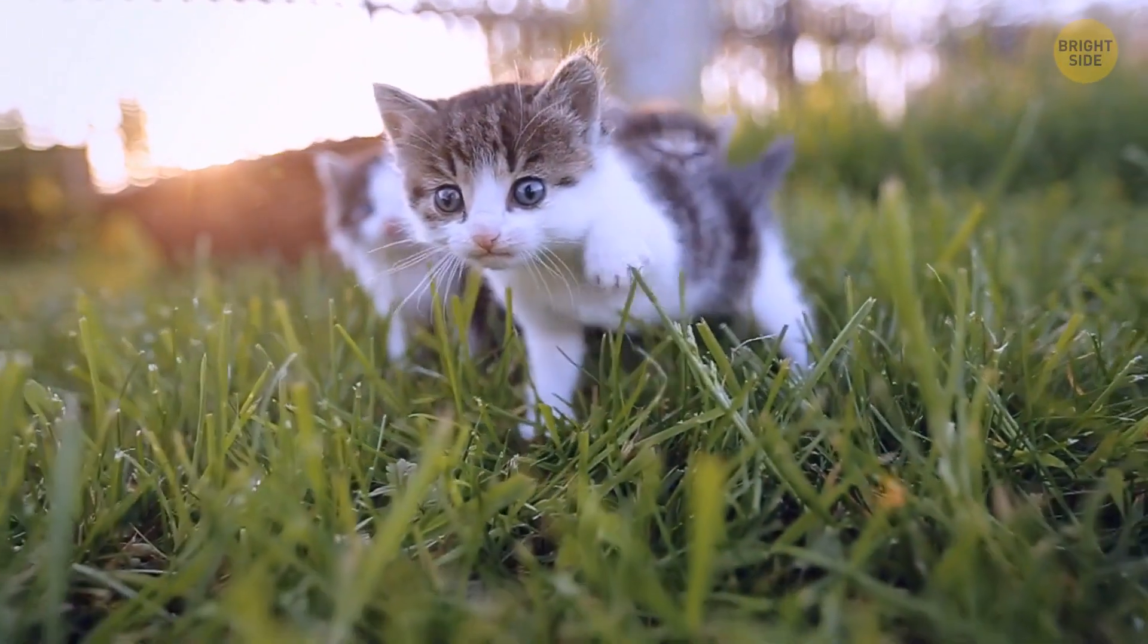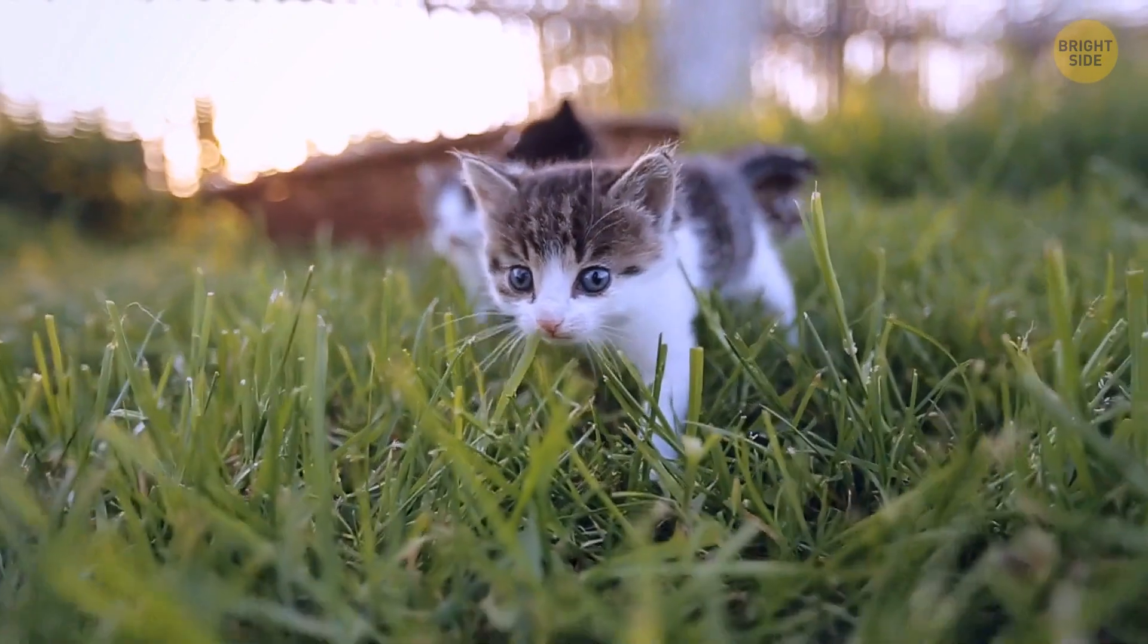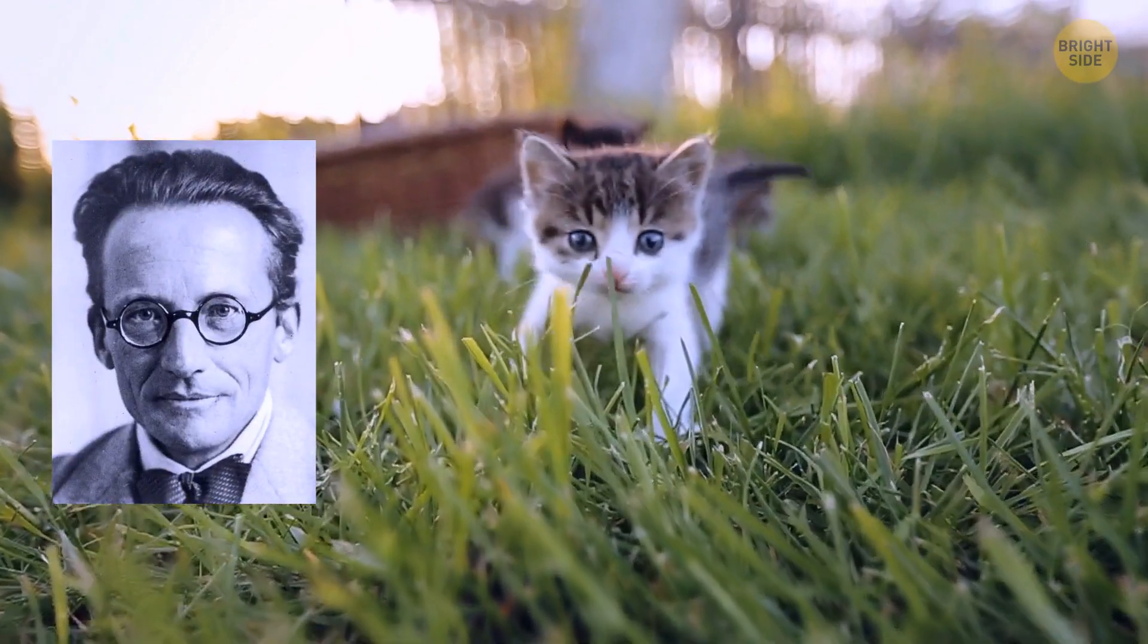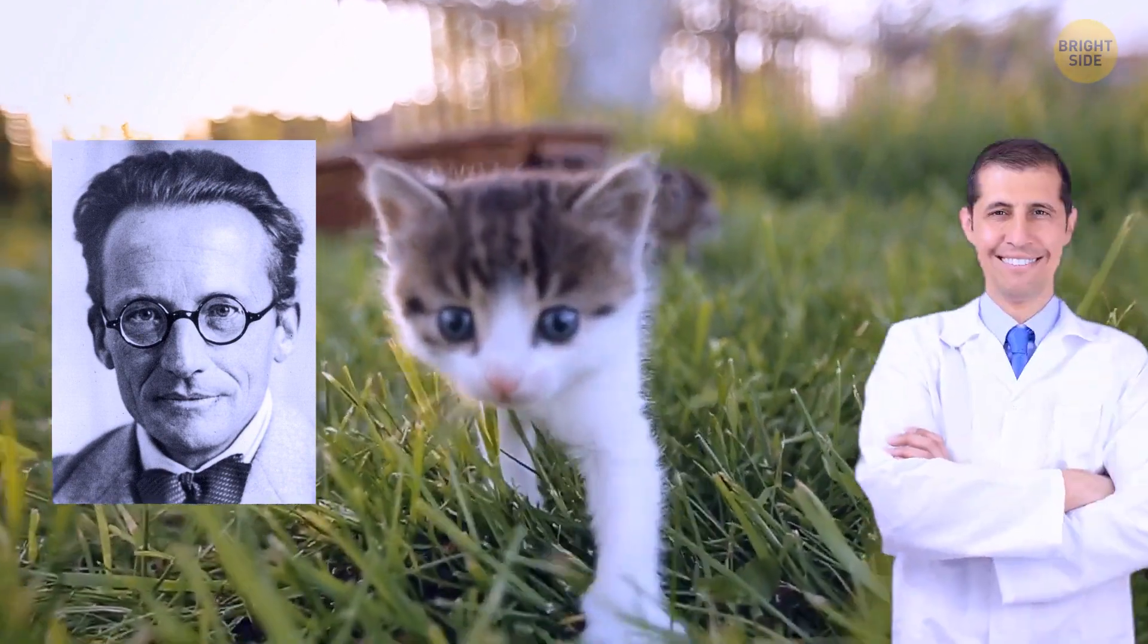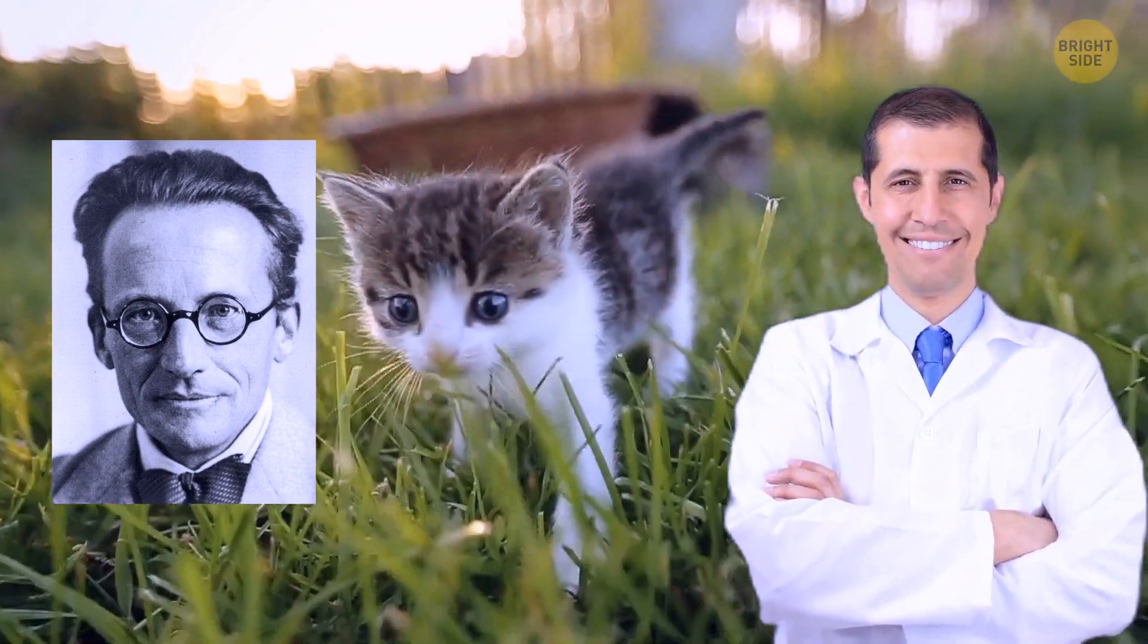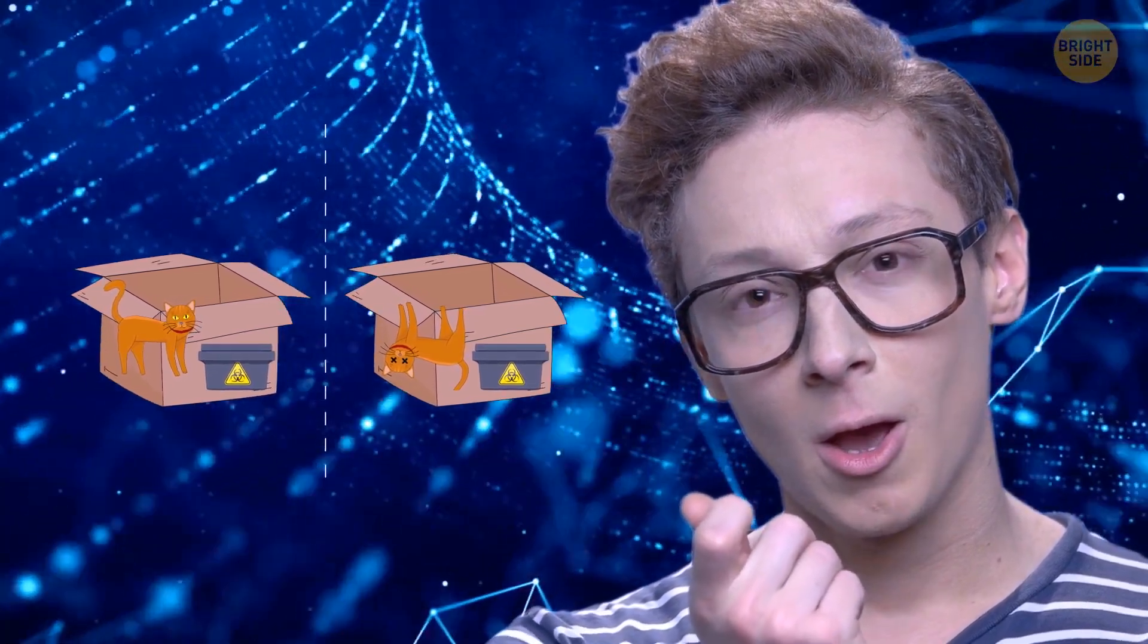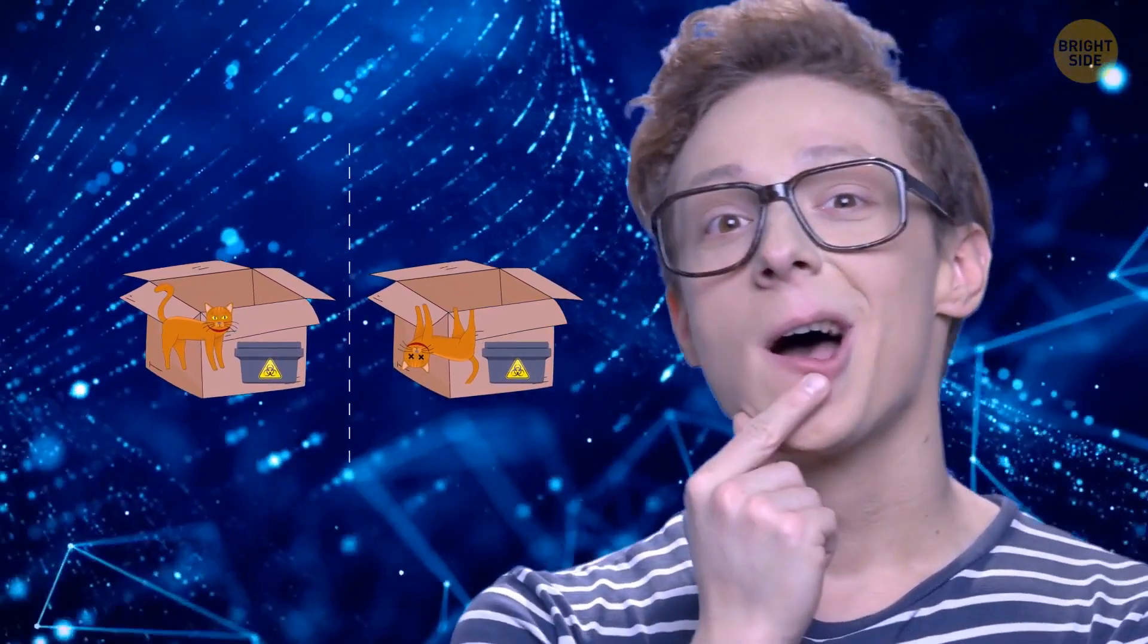So why do we do all this to a poor kitty? Well, initially Erwin Schrödinger wanted to show how stupid it all sounded. But then he accidentally proved that quantum physicists were right. The situation turned out to be pretty funny. It went like this: Ha ha ha, these quantum physicists have no idea what they're talking about. According to their logic, the cat in my box should be both alive and not alive at the same time. Wait, hold on. Uh-oh, they're right.